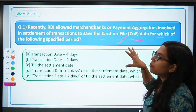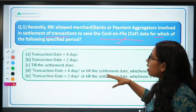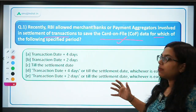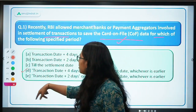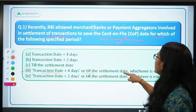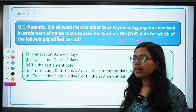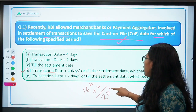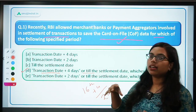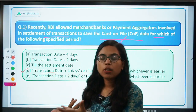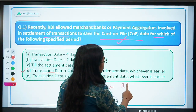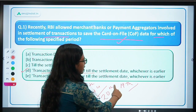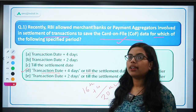But for certain specific transactions, merchants ko allow kiya hai that they can store this data, and a specific time period has been allowed by RBI. The answer is B — that is transaction date plus 4 days or till the settlement date, whichever is earlier. Suppose 16th September ko transaction ho raha hai, us mein 4 days jod do — that is 20th September — ya phir till the settlement date. If the settlement happens on 19th, then you can store the customer's bank-related data only till 19th September. Otherwise a penalty will be imposed.